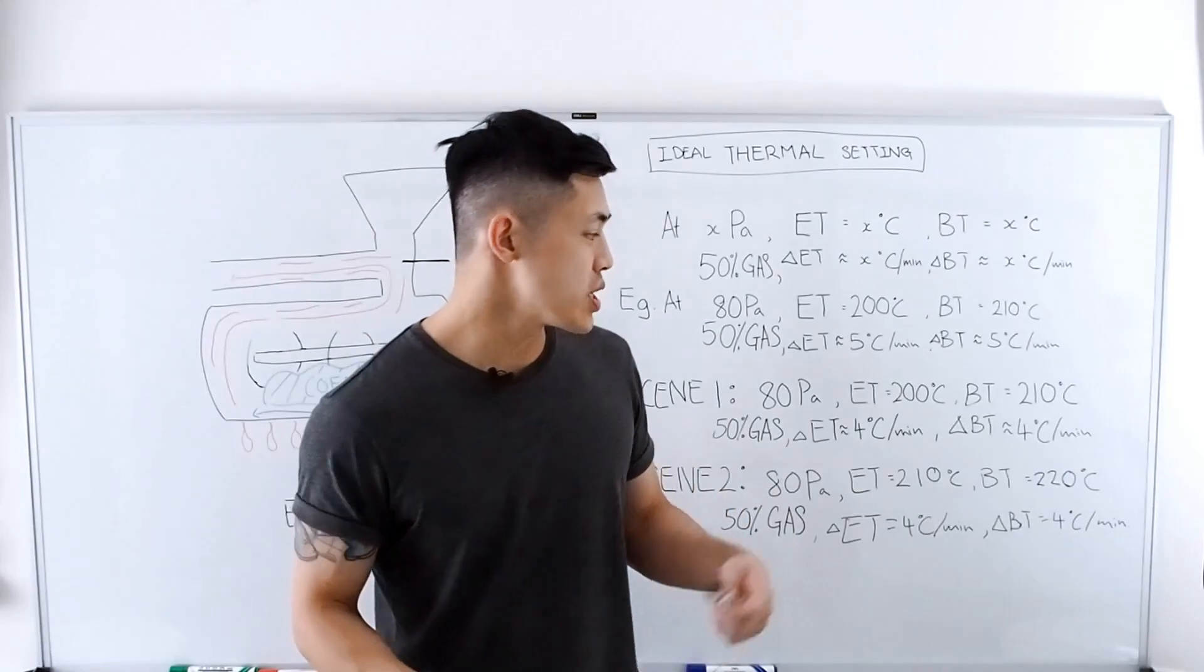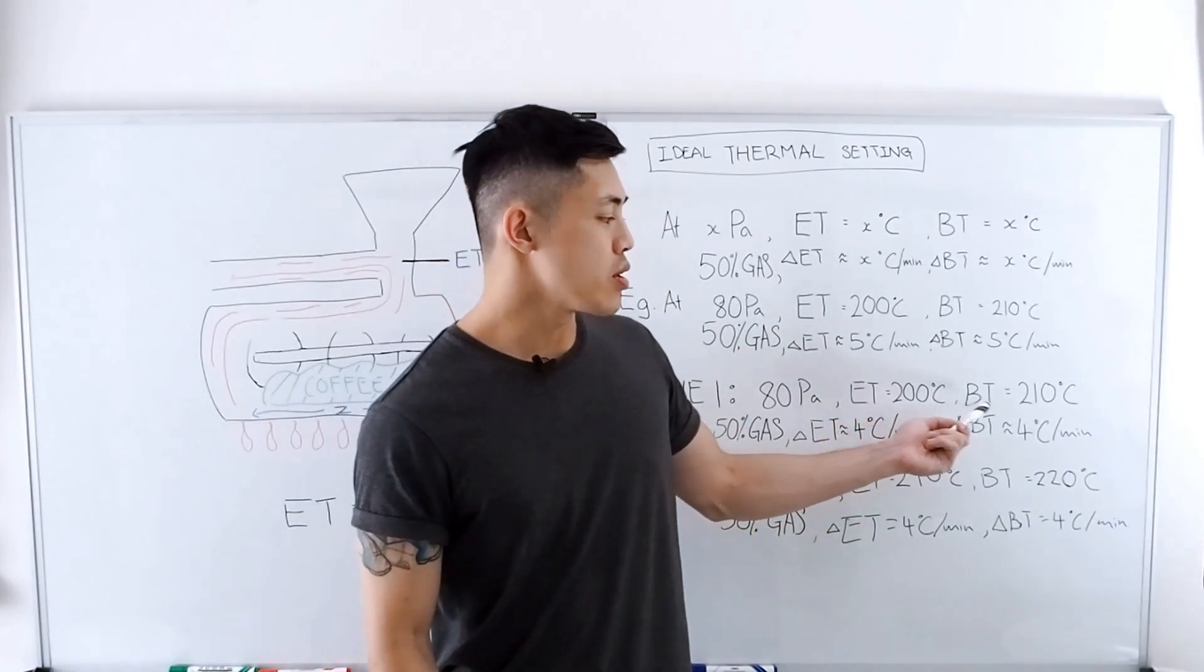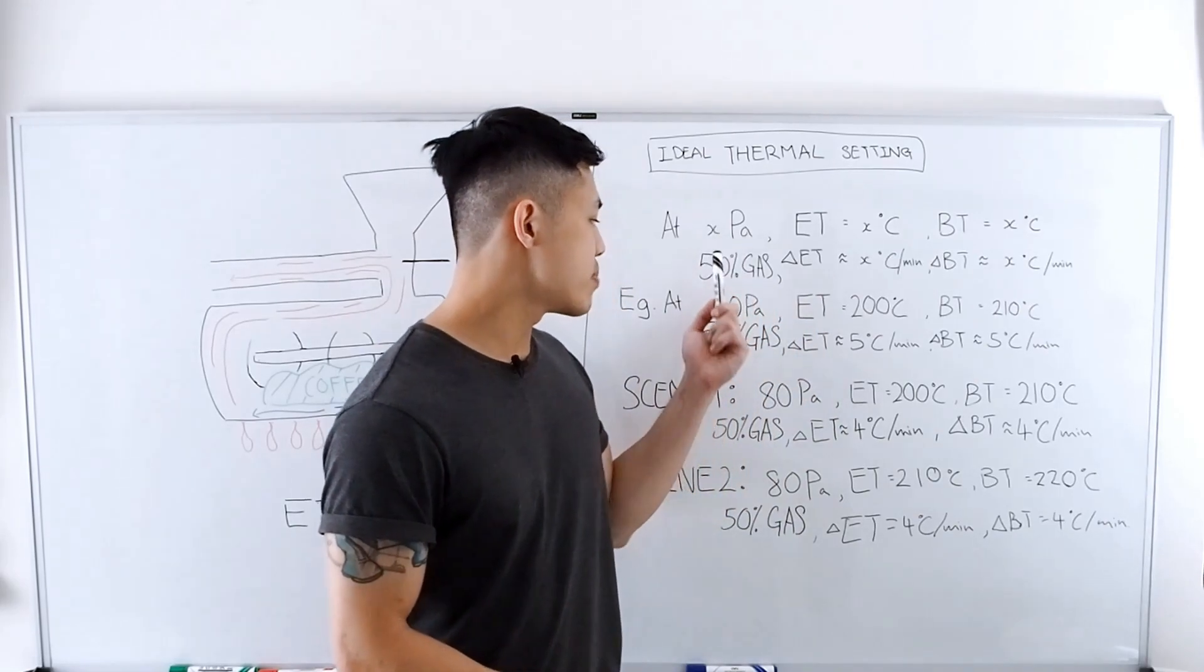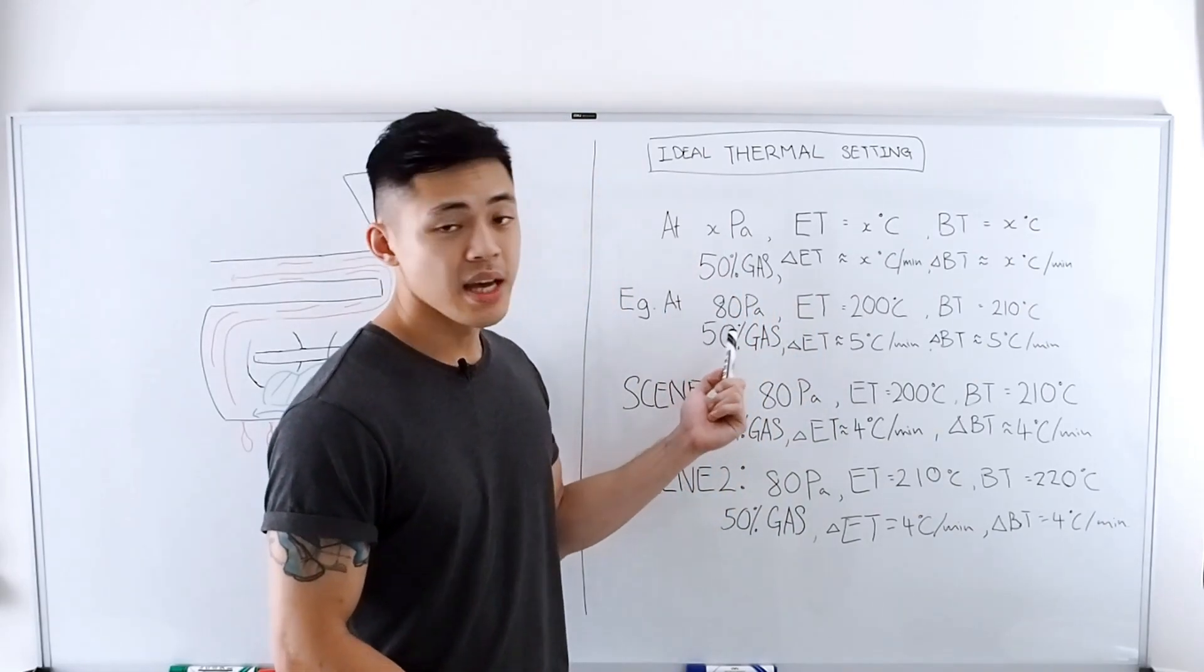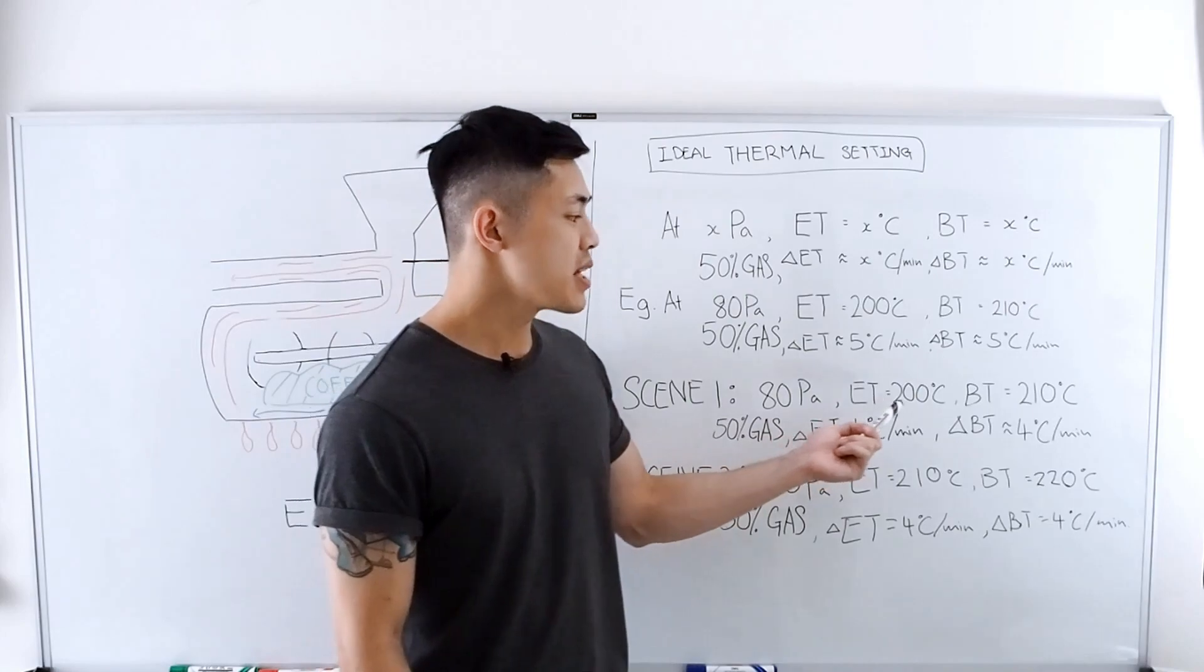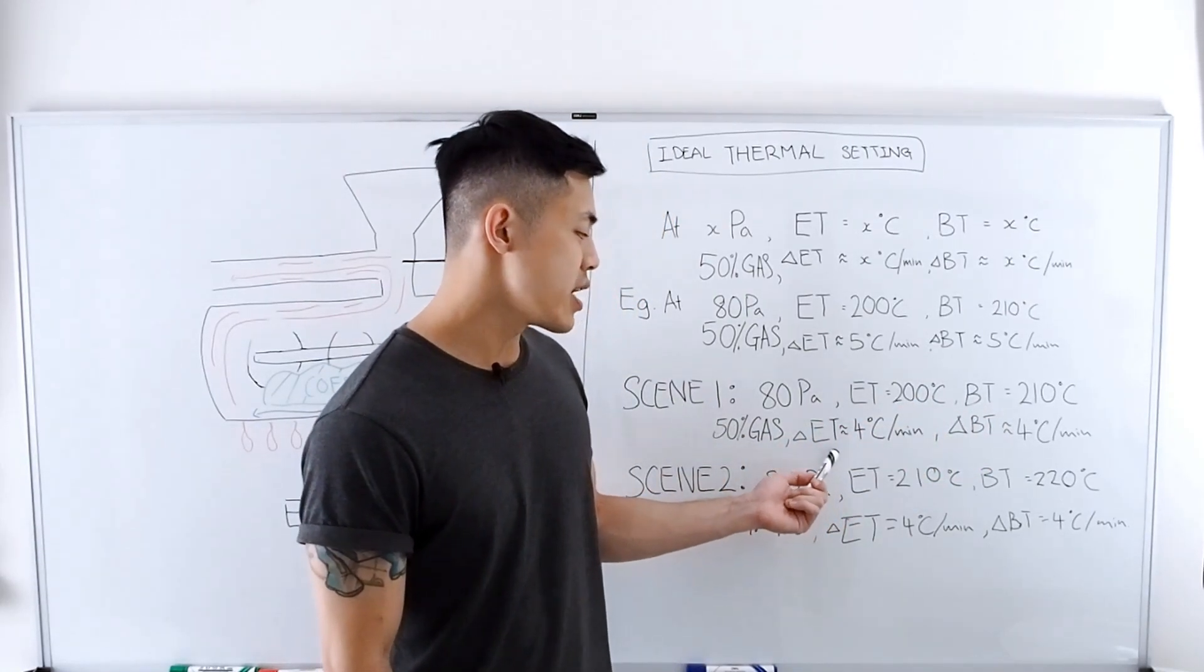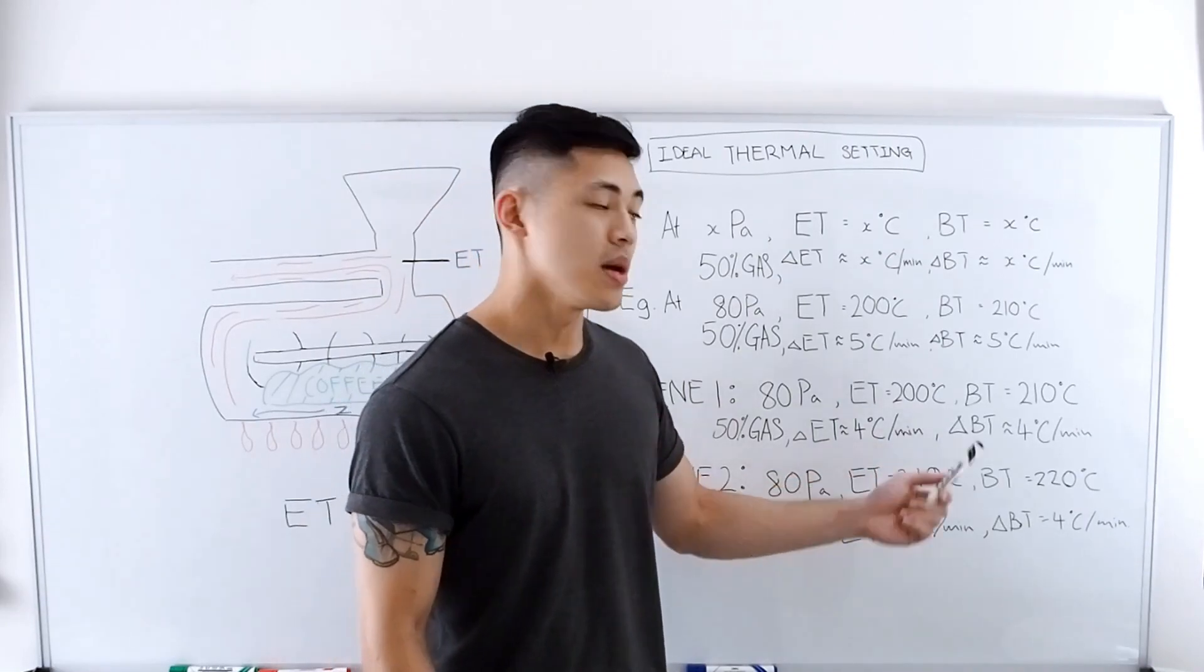Once the temperature has gone slightly below your intended thermal setting, you can reset the airflow and the negative pressure back to your intended thermal settings—in this case 80 pascals—and let the temperature go back up to your intended thermal settings, and you can then check your delta ET and BT again.